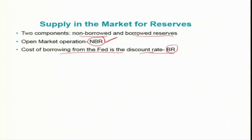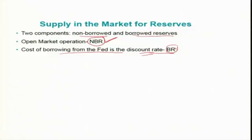By making a change in the discount rate — the rate at which the central bank lends to member banks — that is incentivizing them. For example, reducing the discount rate means the cost of borrowing from the Fed declines and member banks will be more incentivized to borrow from the central bank and utilize these funds for lending and buying government securities. This part we call borrowed reserve.